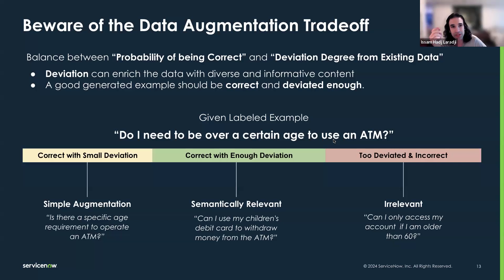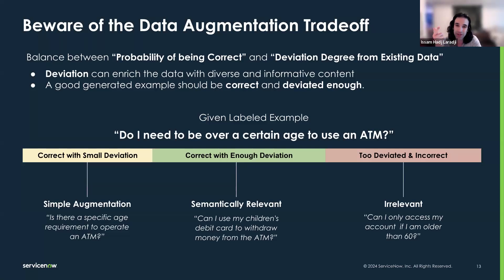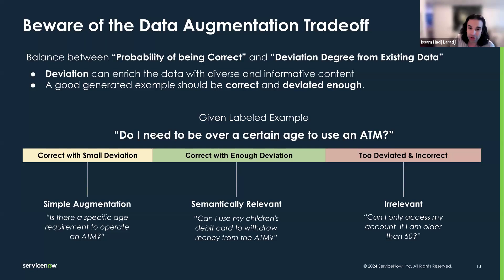When doing data augmentation, there is a trade-off to be mindful of. We need to balance between the probability of a generated example being correct and its deviation degree from existing data. Deviation can potentially enrich the data with diverse and informative content, but a good generated example should be both correct and deviated enough. Small deviation — like just changing synonyms — ensures correctness but doesn't give much diversity. Extreme augmentation can be too deviated and cause irrelevant examples to be generated. What we want is something correct but with enough deviation, like a nice paraphrase while keeping semantic relevancy.